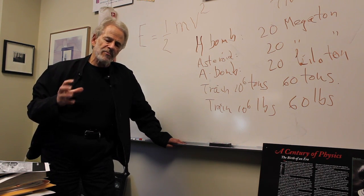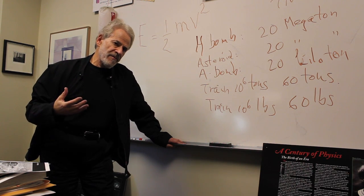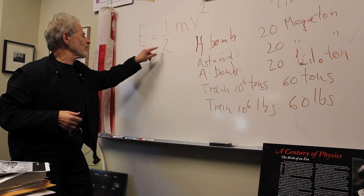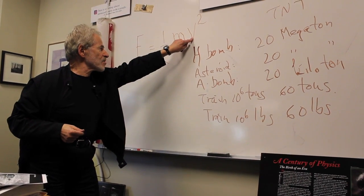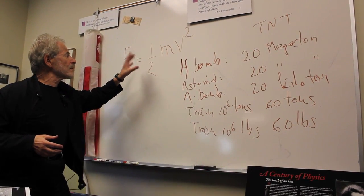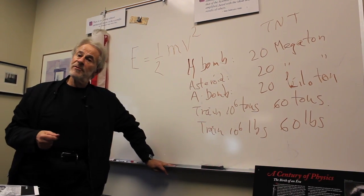There's a formula for kinetic energy that we always teach in introductory physics. Here it is: it's one-half the mass times the speed squared. Notice the square, that's really important. So you can put in the mass of the train and its speed and figure out how much energy it carries.